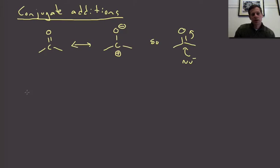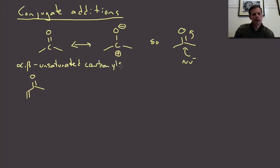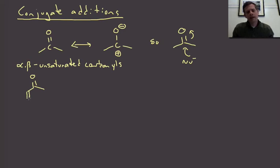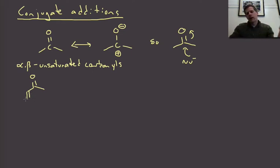Now imagine a scenario where we've got a carbonyl attached to an alkene — a carbonyl and right next to it is an alkene. We call these alpha-beta unsaturated carbonyls. Alpha and beta are just Greek letters. Here's your carbonyl: one carbon away is alpha, two carbons away is beta, three carbons would be gamma, et cetera. So it's just describing the positions from which we've formally removed hydrogens to make the alkene — an alpha-beta unsaturated carbonyl.